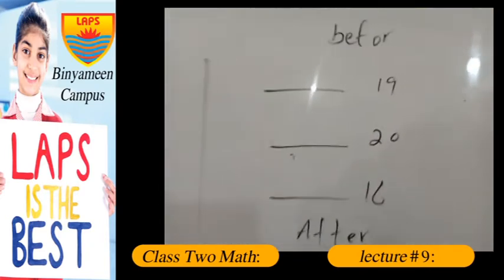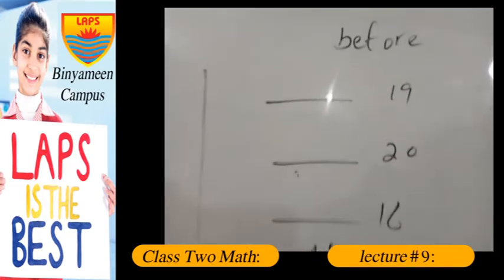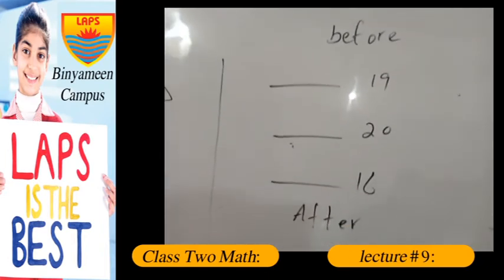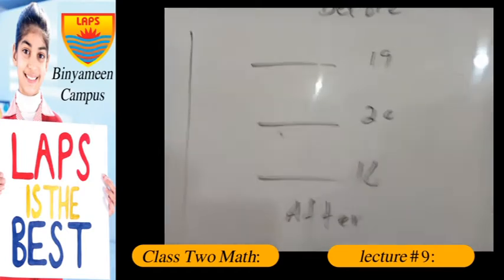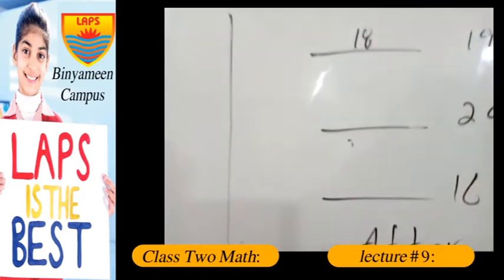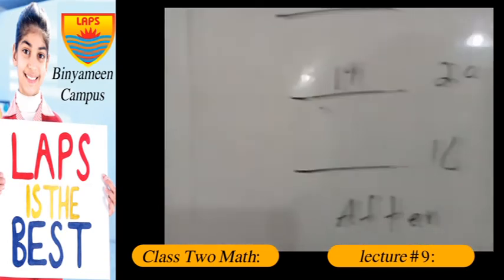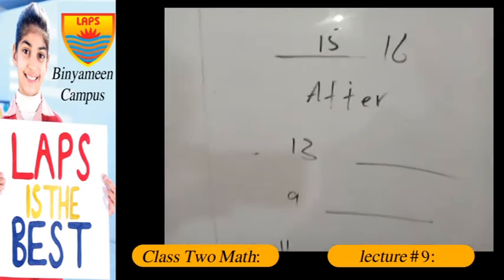Now we have to write what comes before these given numbers like 19. So if we count up to 19, then the number that comes right before 19 is 18. And before 20 comes 19, and before 16 comes 15.